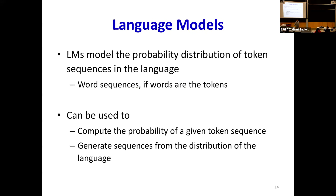So what does it mean to model a language? A language model models the probability distribution of token sequences. I'm using the term 'token' generically — your token could be words, symbols, characters, or anything. Language models learn the probability distribution of token sequences in the language. And once learned, these can be used to compute the probability of a given token sequence, or generate sequences from the distribution of the language, or from the conditional distribution of the language. Every time you're using any of the large language models, it's basically just a language model generating a sample from a conditional distribution that has been particularly well learned.